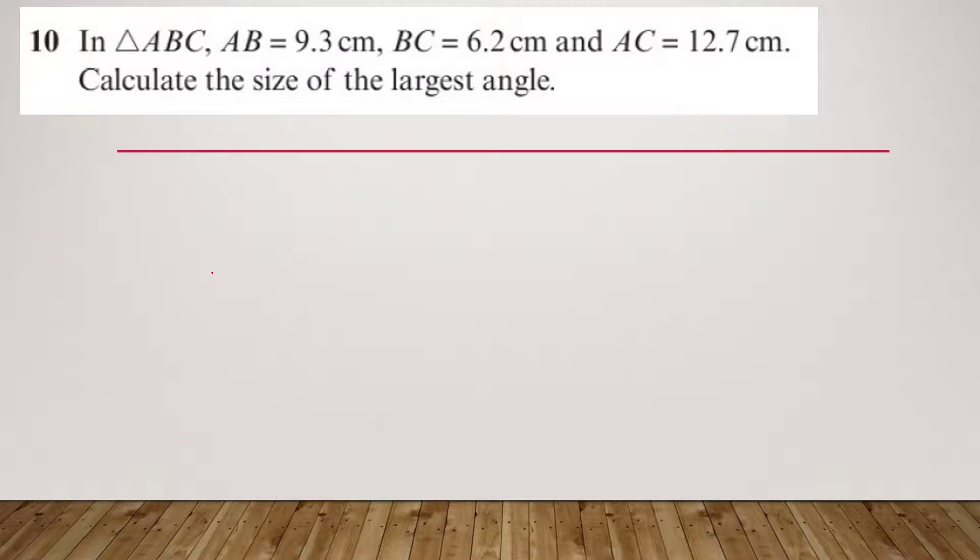Now, in this question you've got a triangle ABC with AB 9.3 centimeters and BC 6.2 so let's just draw the longest side first and that's going to be 12.7 that's AC now AB is 9.3 and BC 6.2 that must be B.